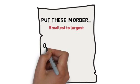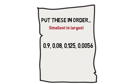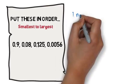For example, you are given this group of numbers, and you need to sort the smallest to the largest. 0.9, 0.08, 0.125, 0.0056.